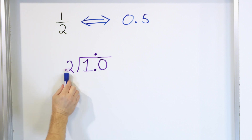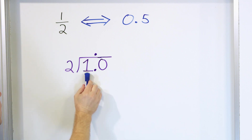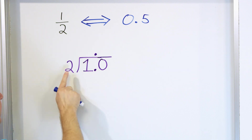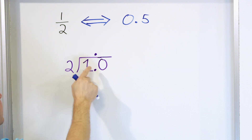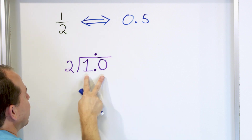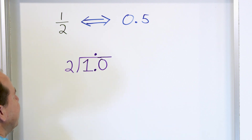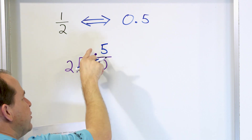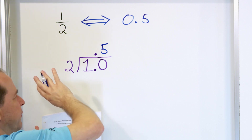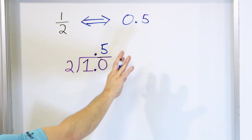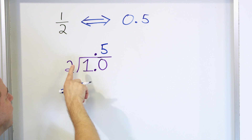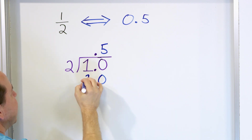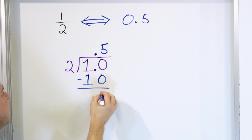Anytime we divide decimals, this decimal point floats up and this is where the decimal will be in our answer. Instead of asking can 2 go into 1, we ignore the decimal completely. Now we have a 10 right here — can 2 go into 10? 2 times something is 10. 2 times 5 is 10, so a 5 goes right here. You're ignoring the decimals; they don't apply to the division process. Once we say 2 times 5 is 10, we multiply, write 10 down, and subtract. 10 minus 10 is 0.